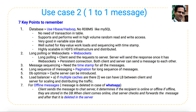The seventh point is offline messages. There is a difference between WhatsApp and Facebook Messenger here. In WhatsApp, as soon as the user receives the message, the offline messages stored in the database are deleted or wiped out. In Facebook Messenger, offline messages are stored for further investigation as well as to maintain historical data.